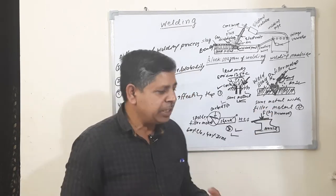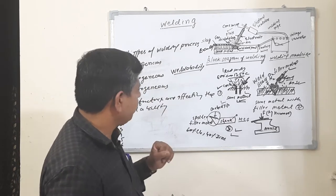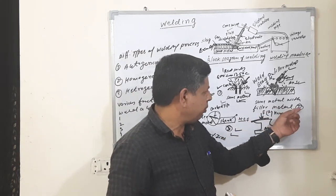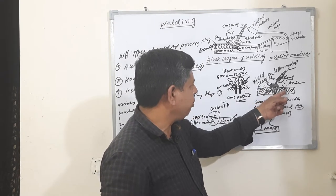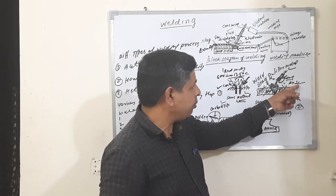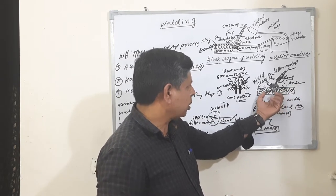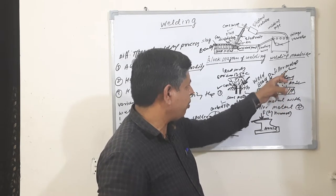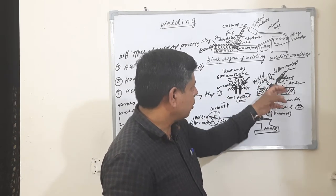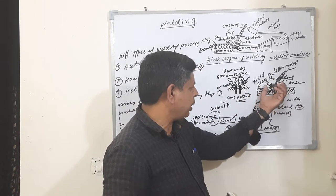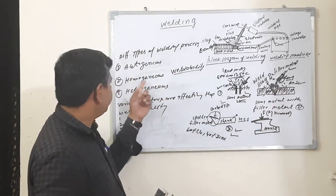This process is the oldest method. Second is homogenous. You can see figure number two. Two pieces made of mild steel are heated to complete the welding with the help of a filler metal. The filler metal is used to complete this joint. This joint is called the homogenous process.